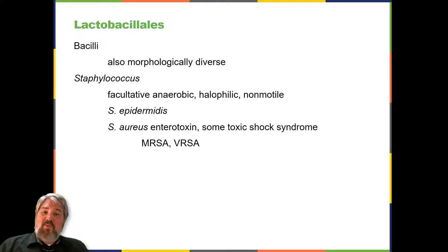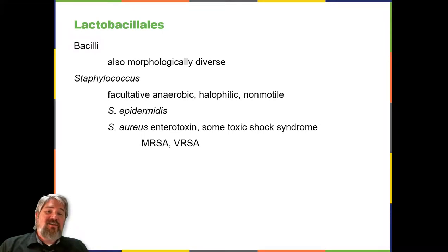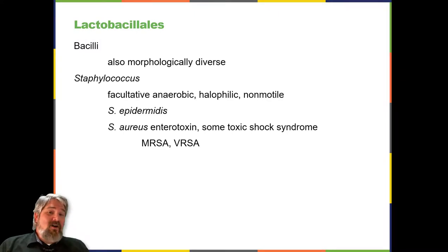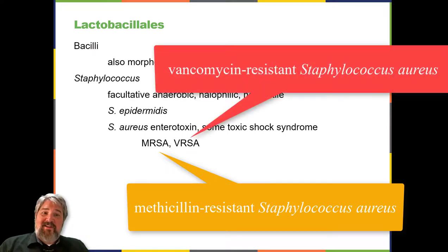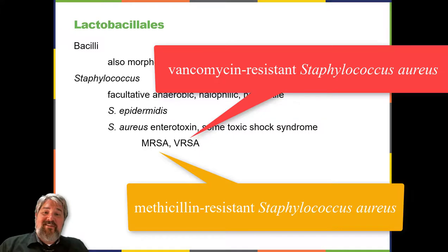Strains of S. aureus cause a wide variety of infections in humans, including skin infections that produce boils, carbuncles, cellulitis, or impetigo. Certain strains produce enterotoxin, which can cause severe enteritis — often called staph food poisoning. Some strains produce the toxin responsible for toxic shock syndrome, which can result in cardiovascular collapse and death. Many strains of S. aureus have developed antibiotic resistance; some are designated as methicillin-resistant S. aureus (MRSA) and vancomycin-resistant Staphylococcus aureus (VRSA), which exhibit resistance to nearly all available antibiotics. Because they are difficult to treat, infections can be lethal.